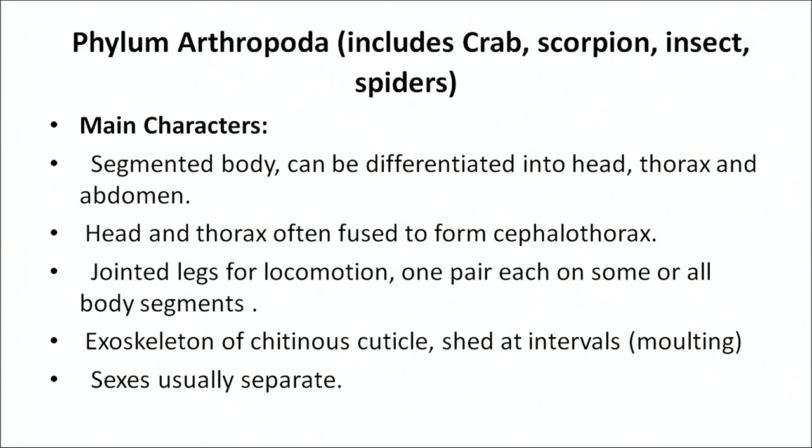The next phylum is phylum Arthropoda, which includes crabs, scorpions, insects, and spiders. Their body is segmented and differentiated into head, thorax, and abdomen. Head and thorax are often fused to form a cephalothorax. They have jointed legs for locomotion — one pair each on some or all body segments. Their exoskeleton is made up of chitinous cuticle, shed at intervals in a process called molting. Sexes are usually completely separate. Arthropoda is further divided into four classes: Crustacea, Myriapoda, Insecta, and Arachnida.